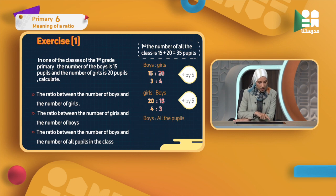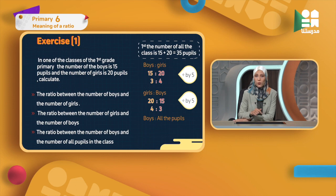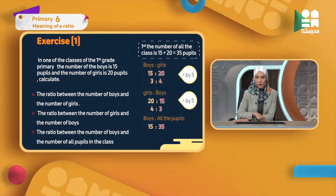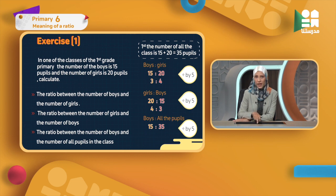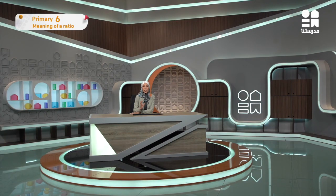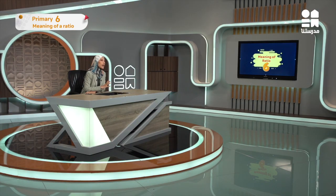The last one: the ratio between the number of boys and all the pupils in the class. Boys is 15, and all pupils I already found by adding boys and girls — 35. So it is 15 to 35, which can be divided by 5: 15 divided by 5 gives 3, and 35 divided by 5 gives 7. So it will be 3 : 7. Here we are finding a part-to-total ratio — comparing a part to the total.